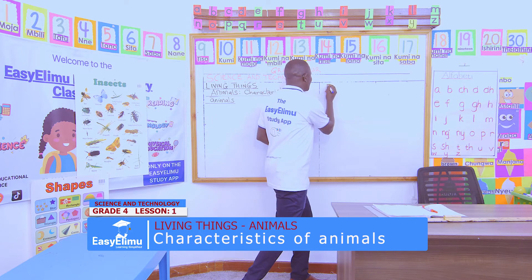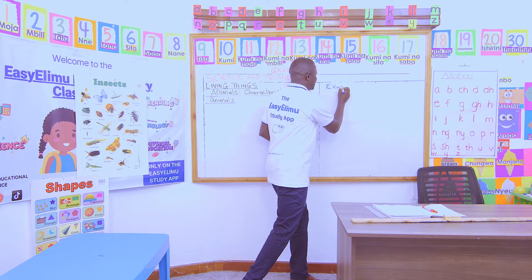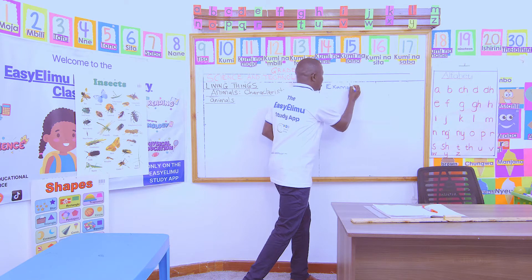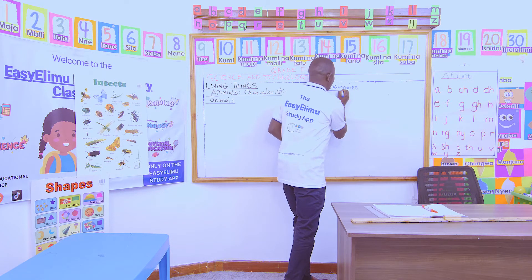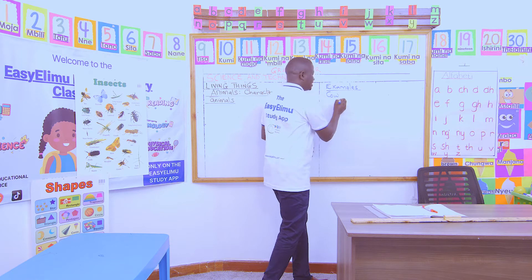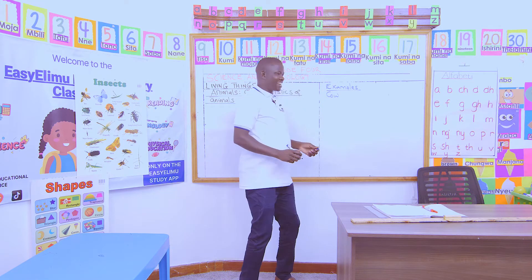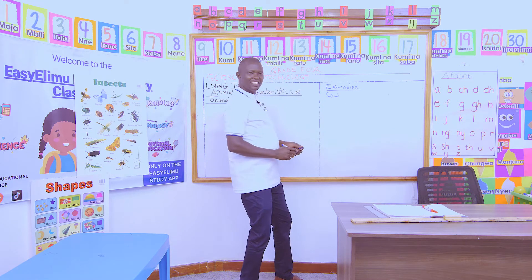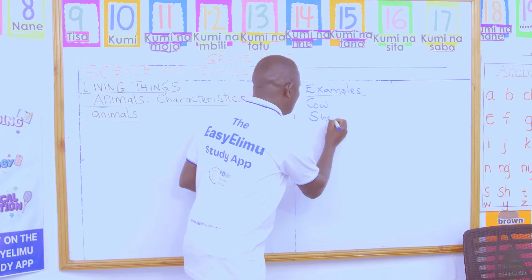Victor said: Cow. Correct! Examples of animals found in our grandmother's farm — we have cow. John, can you give us another example? Sheep. Correct, we have sheep.